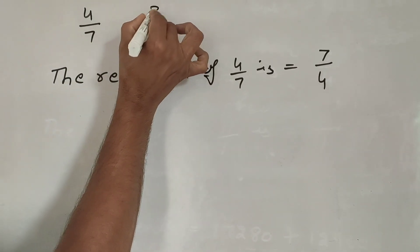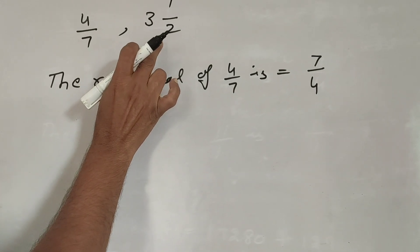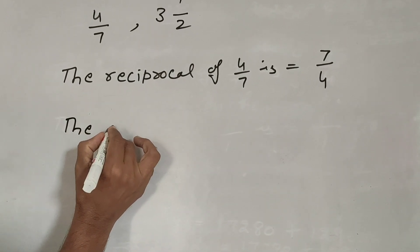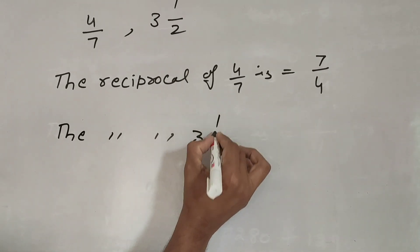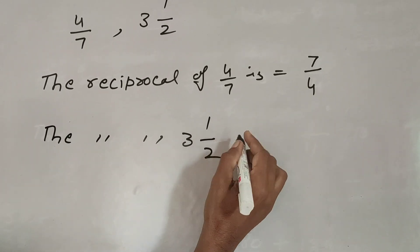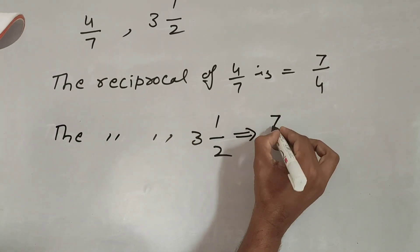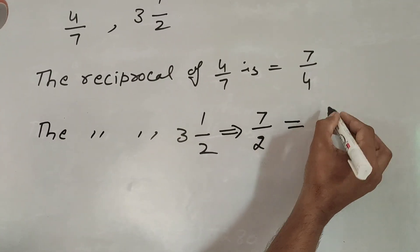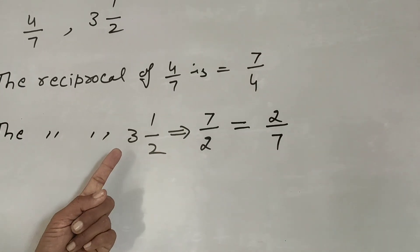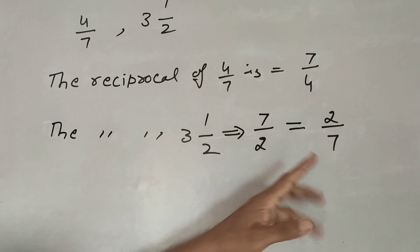Next example: 3 and 1 by 2. This is a mixed fraction. We want to find its reciprocal. First we change this mixed fraction into an improper fraction: 3 times 2 plus 1 equals 7 by 2. Then the reciprocal is 2 by 7. So first we change the mixed fraction into an improper fraction, and then we find the reciprocal.